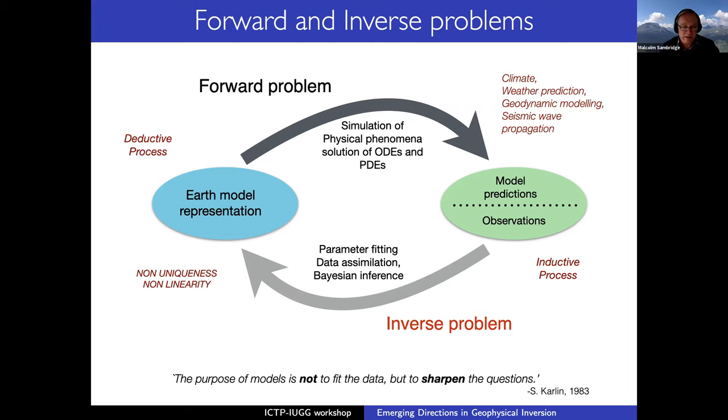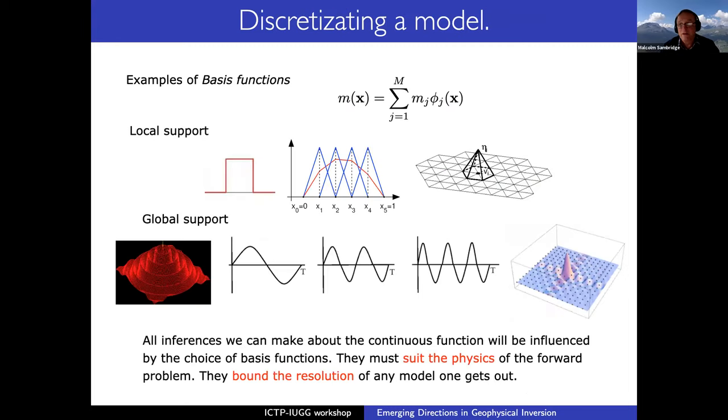Some would argue forward problems are easier to solve than inverse problems. Some might argue it the other way around. But I always come back to Samuel Karlin, 1983, who is a famous statistician. He said, the purpose of models is not to fit the data, but to sharpen the question. And that's always stayed with me, because when we solve an inverse problem, we're always at best finding some approximation to the thing we don't know about, approximation to the earth. It is not the earth, it is always some limited, inadequate approximation.